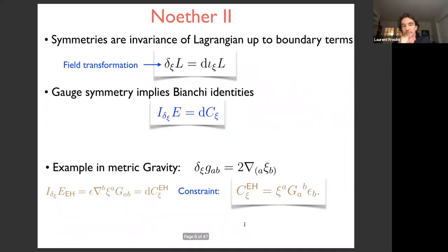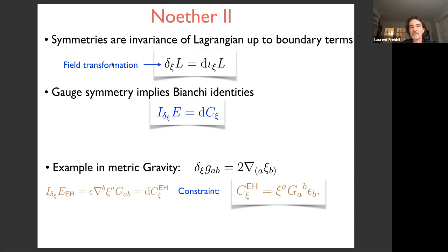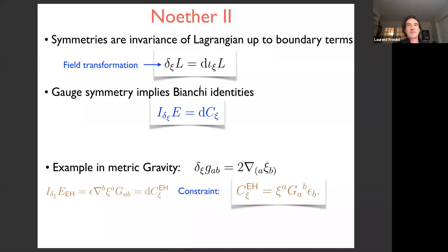The main aspect of Noether's theorem concerns symmetries. Symmetries are invariances of Lagrangians up to boundary terms. For a covariant Lagrangian under diffeomorphism transformations, delta_xi on the metric is just the Lie derivative of the metric — an active transformation on the fields. Then delta_xi of L is essentially the differential of the contraction alongside xi.